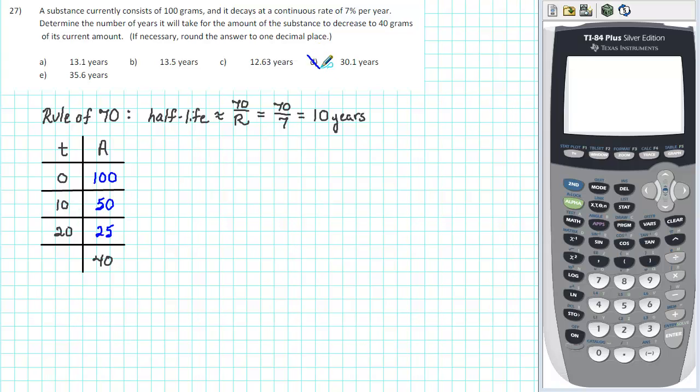So we can eliminate D and E. Those answers are unreasonable. Our answer must be A, B, or C.